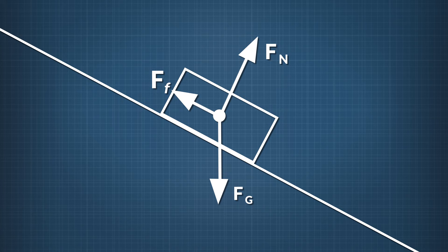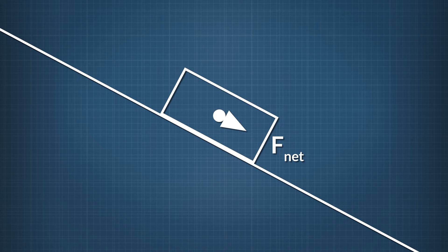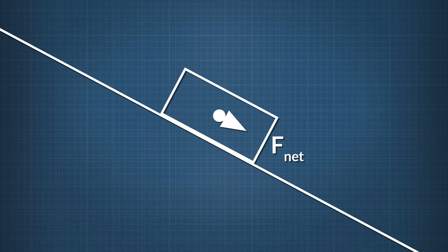Are there any other forces? No, the only forces acting on the block are gravity, the normal force, and friction. Combining these forces adds up to an arrow pointing down the ramp. The component of the force of gravity pointing down the ramp is stronger than the friction force, and the block speeds up down the slope. That's a closer look at free body diagrams.